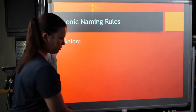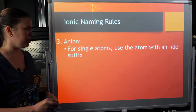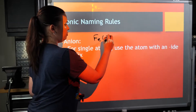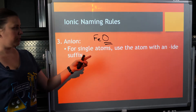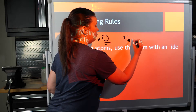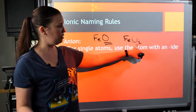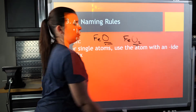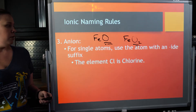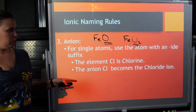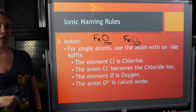Let's talk about the anion. If you have a single type of atom, you end it with -ide. So where we had FeO, the anion was just oxygen, and we end that with -ide — iron(II) oxide. It doesn't matter if you have multiple of the anions; even if there are 1, 2, or 17 of the same type of atom, you end it with -ide. For example, chlorine becomes chloride, oxygen becomes oxide. You change the ending to -ide as long as it's not polyatomic.